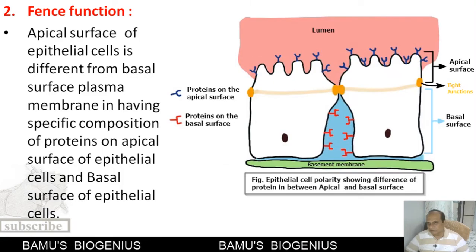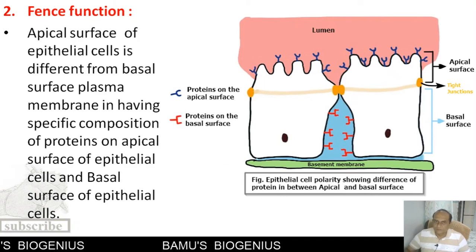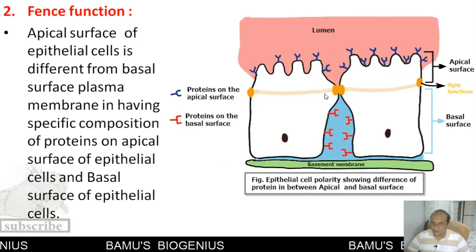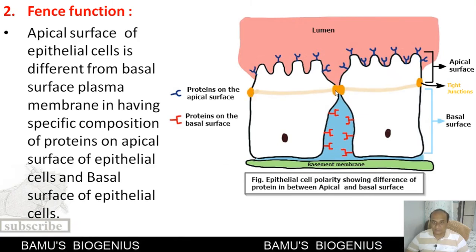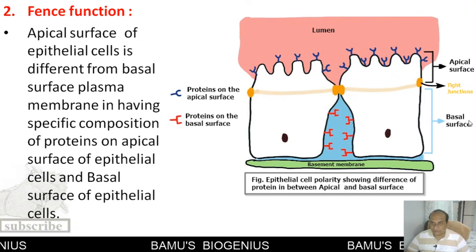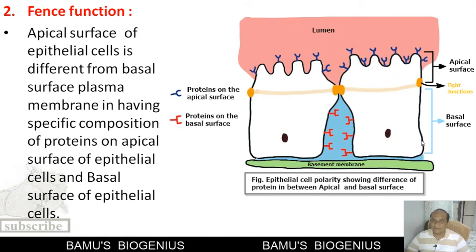Now we will discuss the second function of tight junctions: the fence function. We know that tight junctions form a belt-like structure around each and every epithelial cell. These tight junctions are responsible for not allowing certain kinds of membrane proteins or lipids to pass from the apical surface to the basal surface, so these proteins cannot diffuse from apical surface to the basal surface.